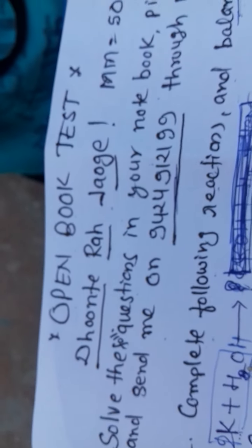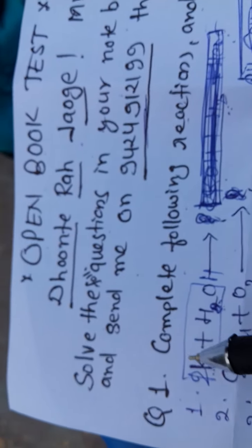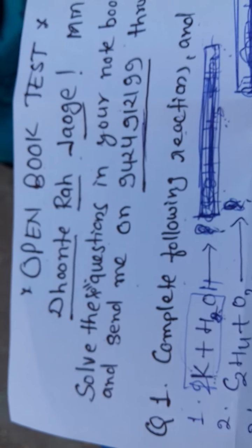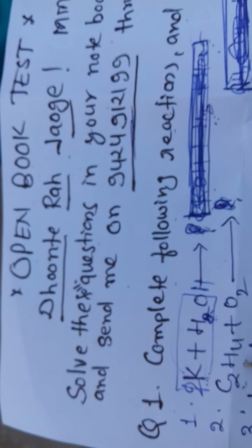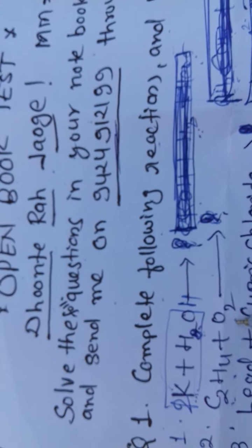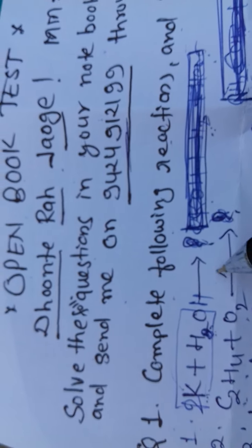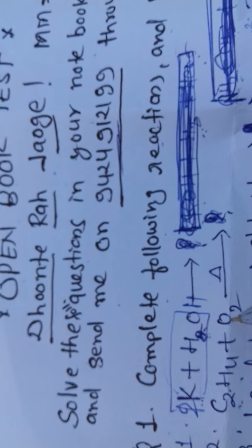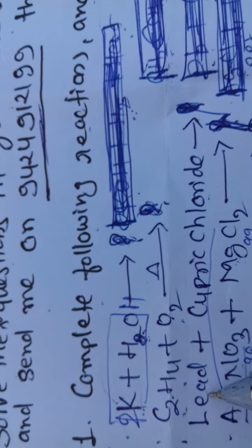Potassium reacting with water. In exam, they ask what happen when potassium or sodium we drop in water. Second question, this is C2H4 ethene. Ethene is reacting with oxygen. It means we are heating this ethene in presence of air.